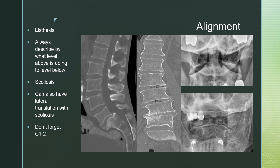When you talk about alignment, you're talking about listhesis, and you always describe what the level above is doing to the level below. So here at L5-S1, you would describe this as anterolisthesis of L5 over S1. You would not describe it as retrolisthesis of S1 over L5. By convention, it's always the level above to the level below.